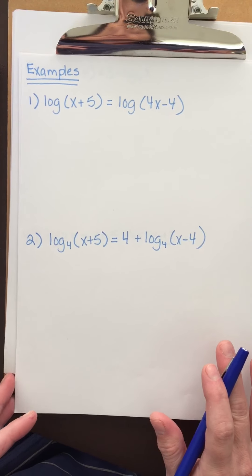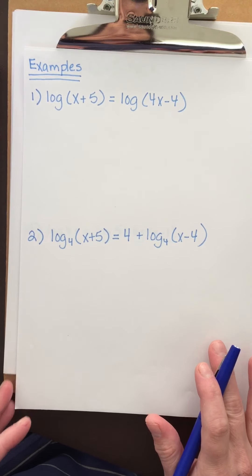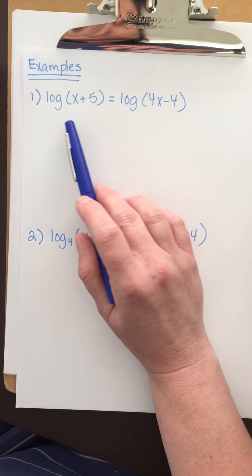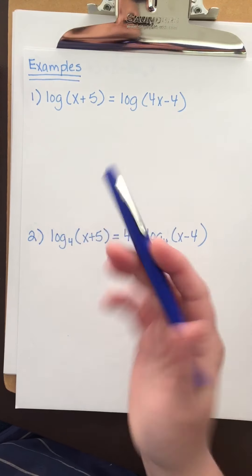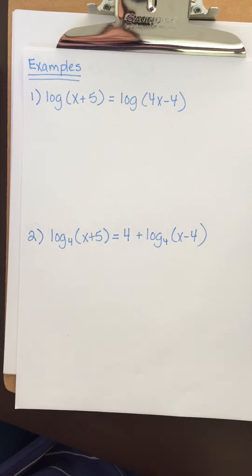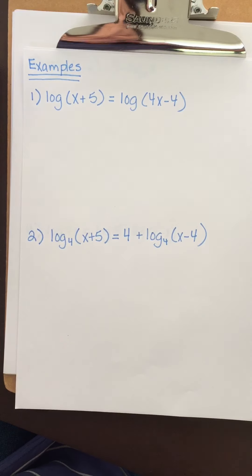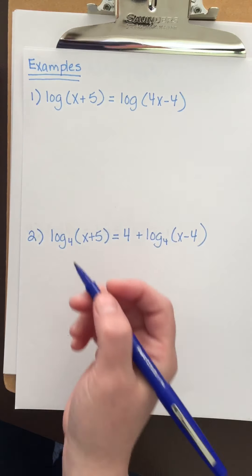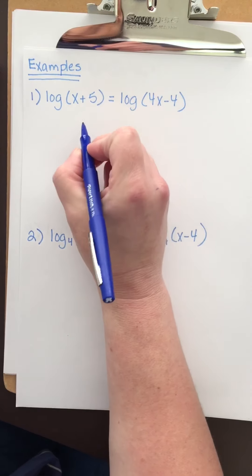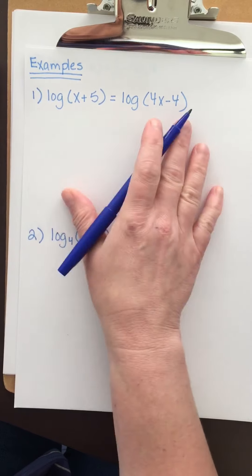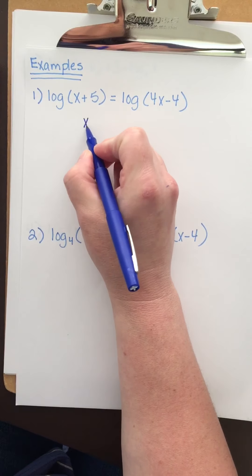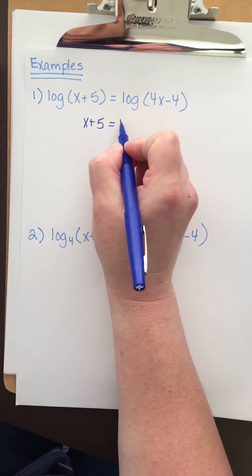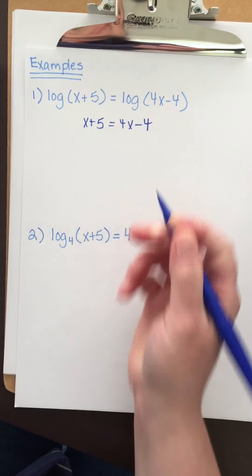For the first one we have log of x plus five is equal to log of four x minus four. I don't see the base, so the base is ten. They've got coefficients of one, so we use the one-to-one log property. Because of this, I can say that x plus five must be equal to four x minus four.